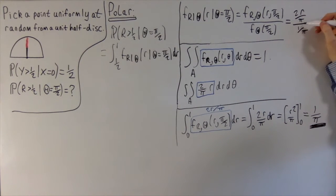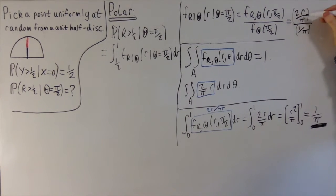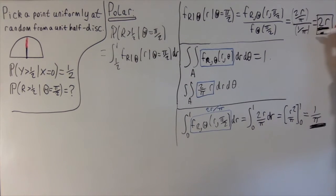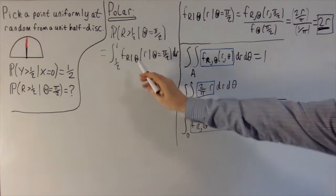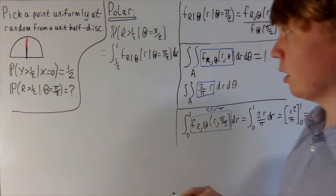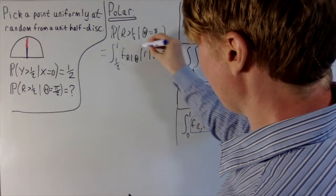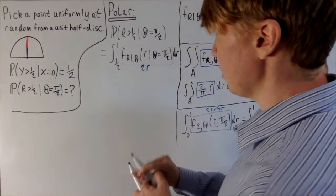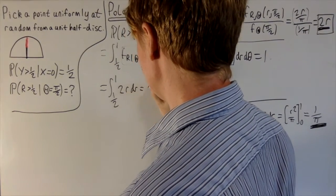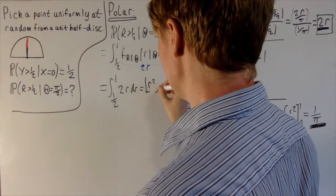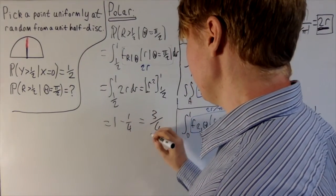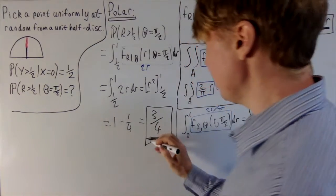The marginal is 1 over pi, so the conditional PDF becomes 2r over pi divided by 1 over pi. The 1 over pi terms cancel, giving the conditional PDF for r given theta equals pi over 2 as simply 2r. So the probability is the integral from one half to one of 2r with respect to r, which gives r squared evaluated between 1 and one half: 1 minus one quarter equals three quarters.